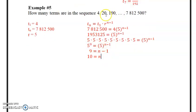So how many terms are in the sequence? It would be 10 terms. So this last term of 7,812,500 is the 10th term in the sequence.